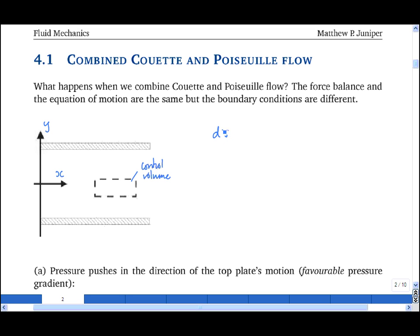From which we find that dτ/dy equals dp/dx. In general, these would be partial derivatives, but because τ only varies in y, we can use the ordinary derivative dτ/dy, and because p only varies in x, we can use the ordinary derivative dp/dx.